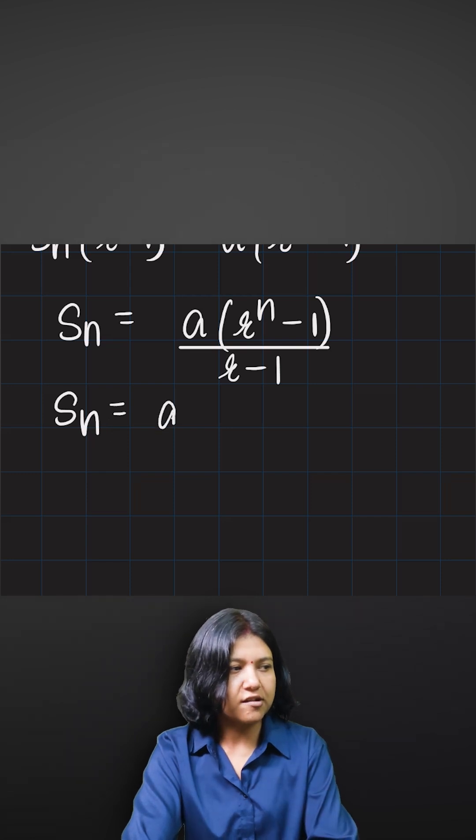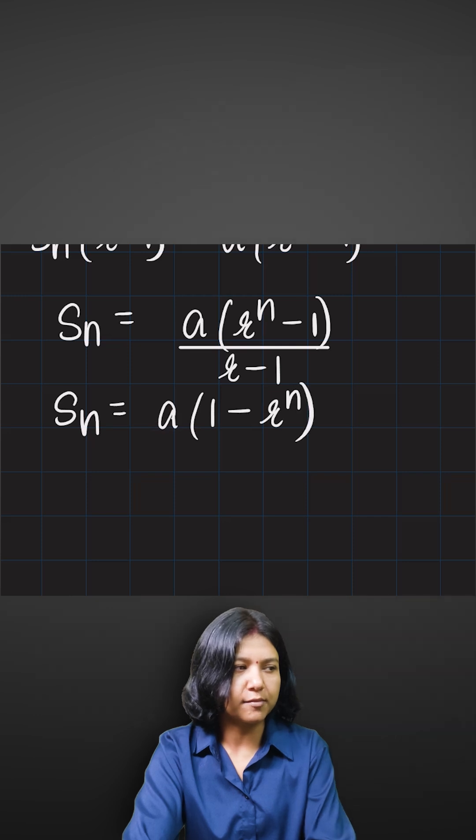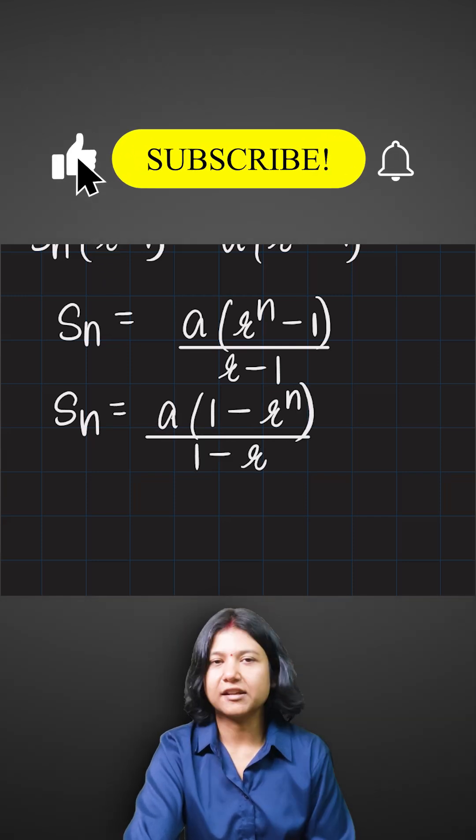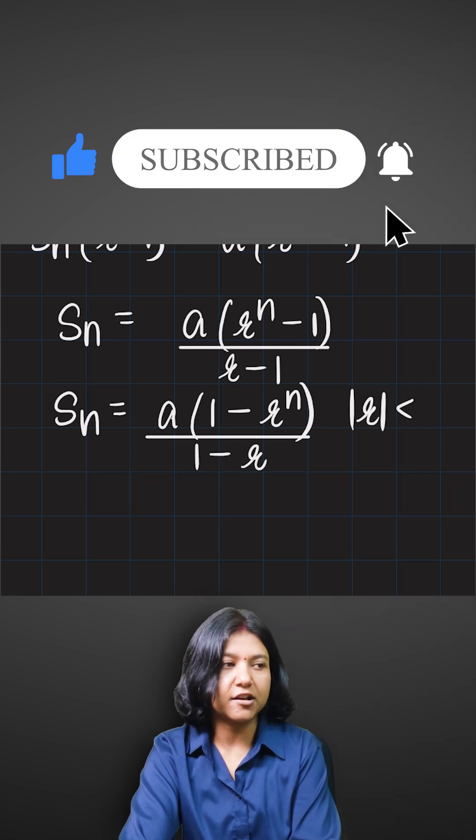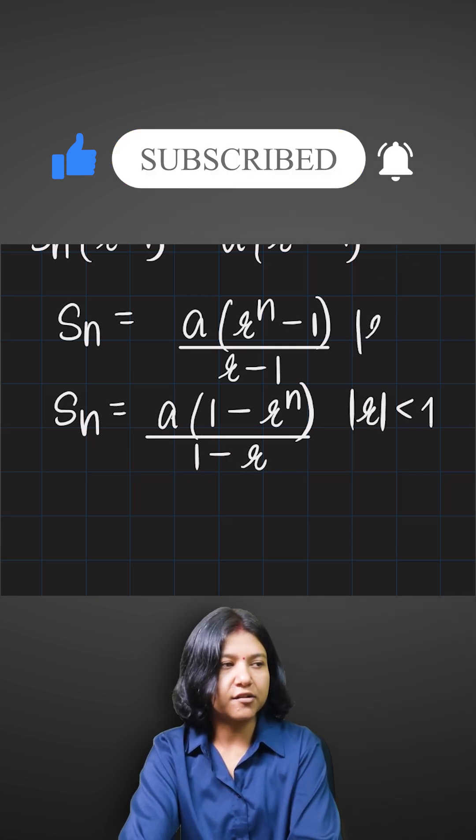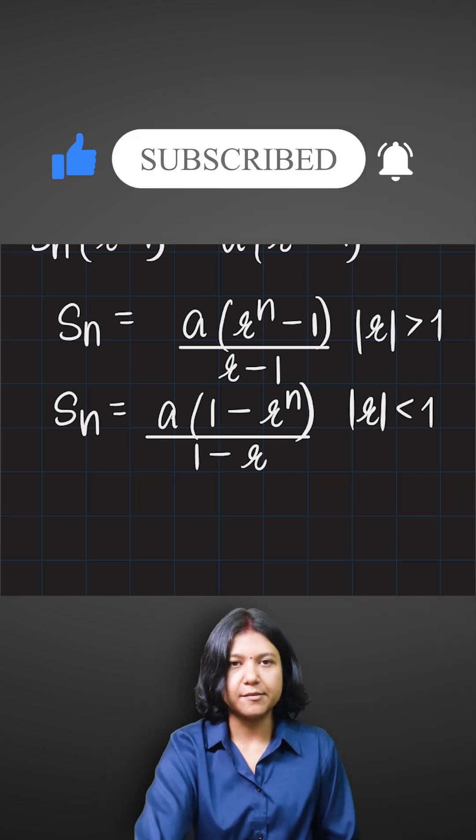So nothing changes, it's just that because we were raising power to a number less than one, we want to keep that term at the back of one and then we just do one minus r. So this is for the value of r—no matter what sign it is—the value has to be less than one, and here the value has to be greater than one. Very simple.